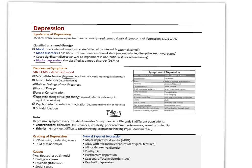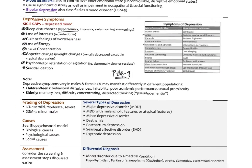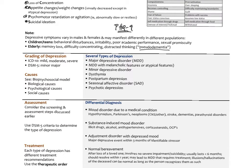In children and teens, behavioral disturbances, irritability, poor academic performance, and sexual promiscuity can all be signs of depression. In the elderly, depression can manifest as memory loss, difficulty concentrating, and distracted thinking — sometimes called pseudo-dementia. This is not true dementia but is triggered by depression, so we always look at depression as a potential underlying etiology.